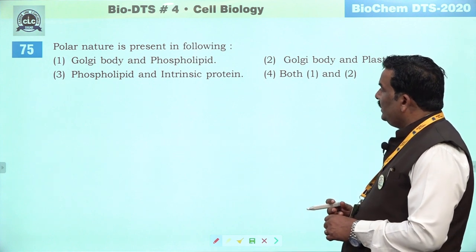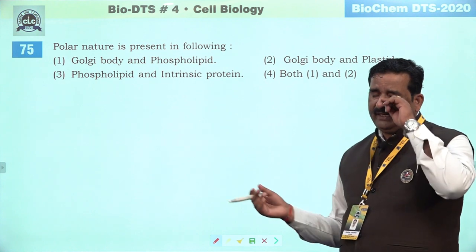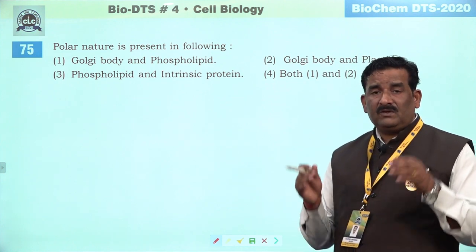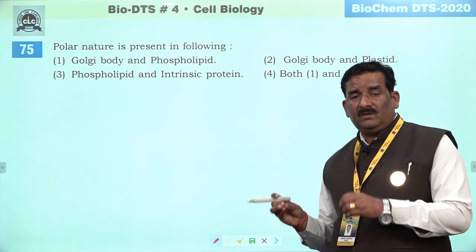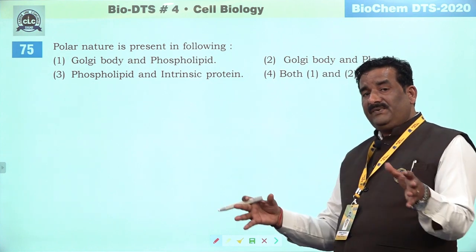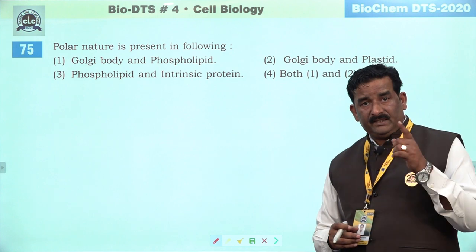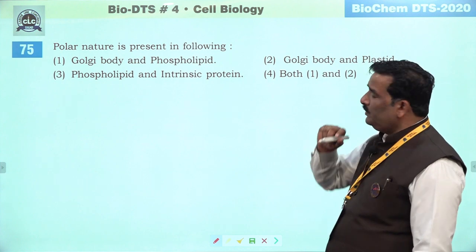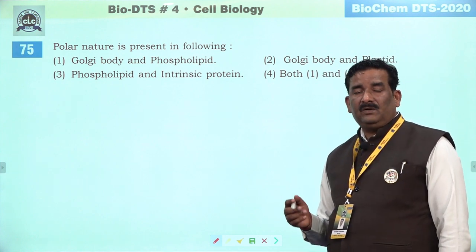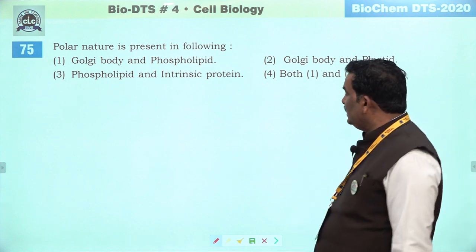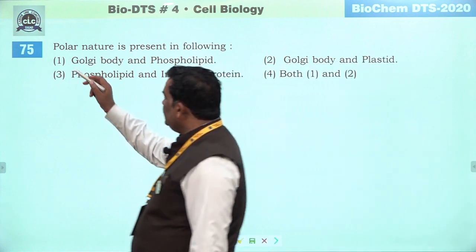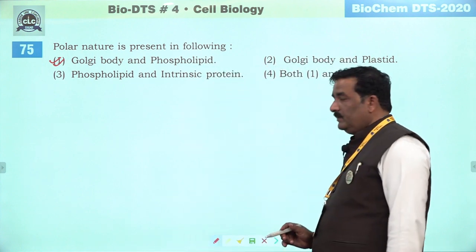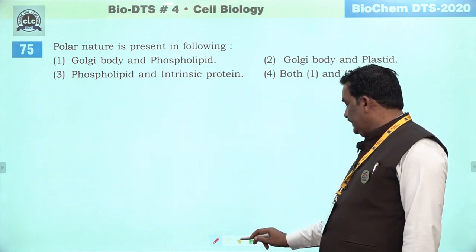Next question: polar nature is present in following. Golgi body concentrically arranged hote hain — unka cis face always arranged towards the nucleus aur trans face arranged towards the peripheral region — means they represent polarity. Phospholipid bhi polar molecule hai — their head presents towards the peripheral region and tails towards the inner side. First is the right answer.